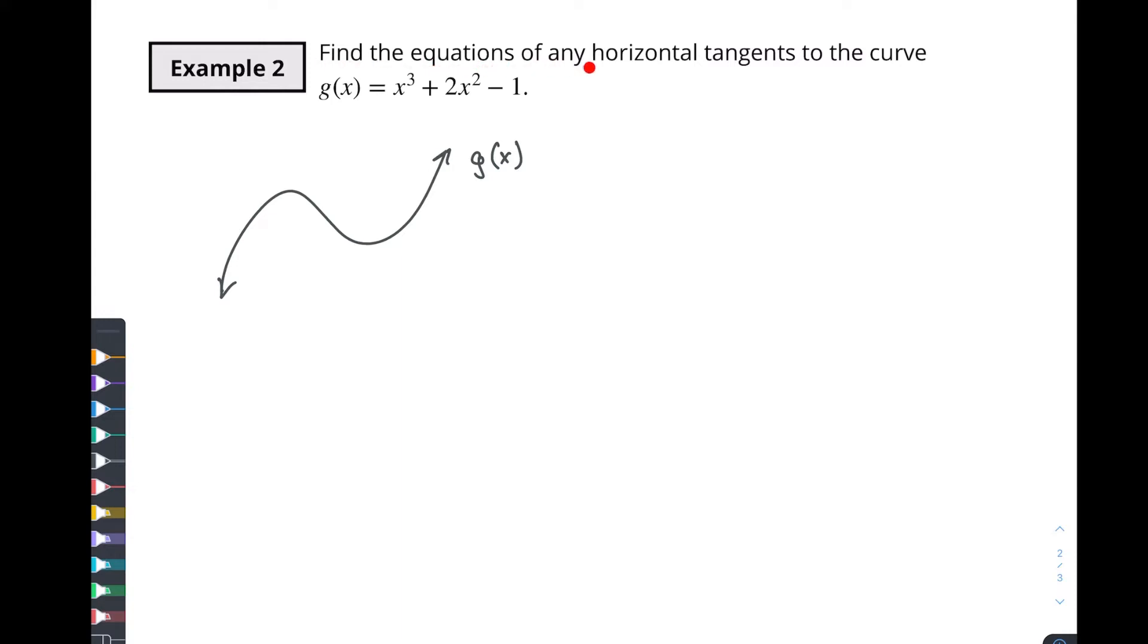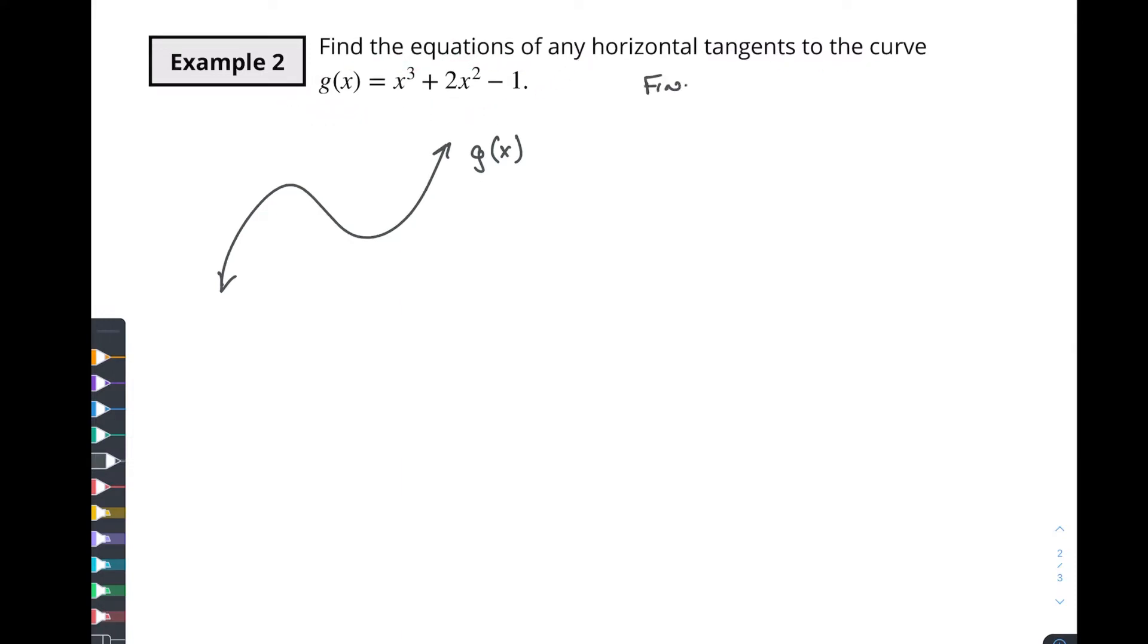Alright, so we're going to find the equations of any horizontal tangents to the curve of this function. In the previous video we wanted to find coordinates on g of x, we wanted to find the derivative of g of x, and then we wanted to substitute x from g of x into g prime of x. So essentially what we're doing is we're using the x value for both the original function and for the derivative because when we put it in the derivative we find the slope, when we put it in the function we find the coordinate, and then we put those things together to find the equation of the tangent lines.